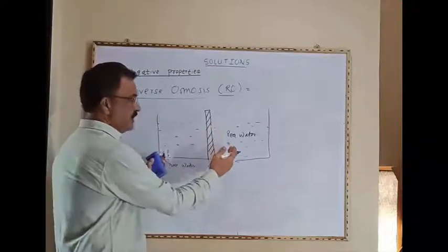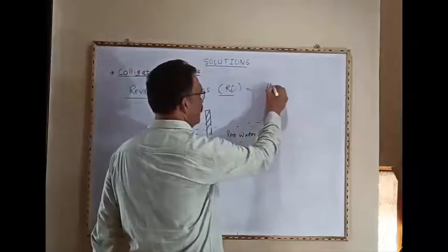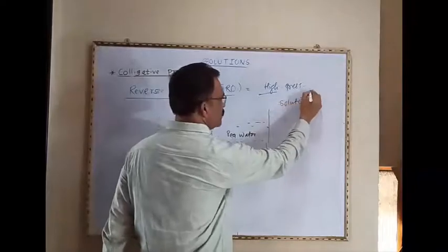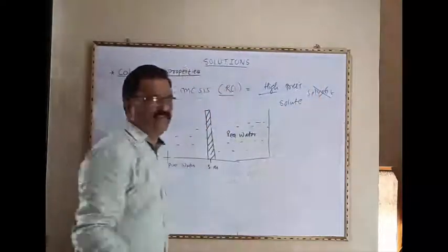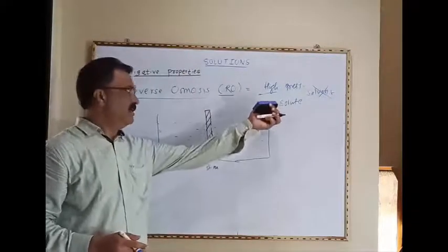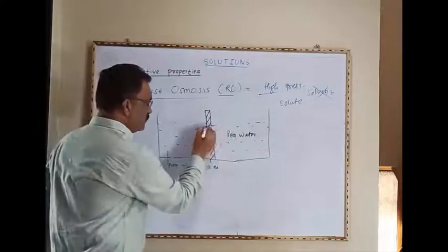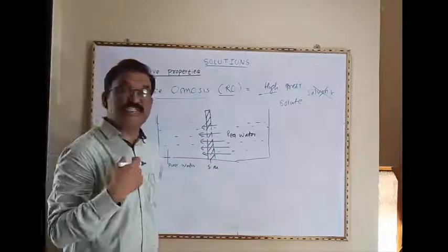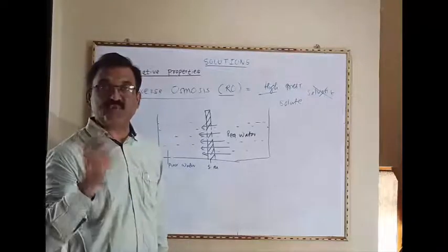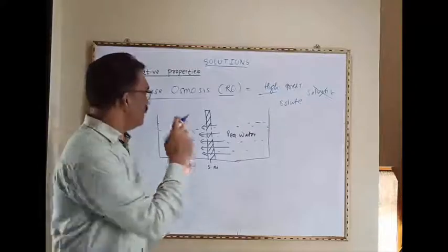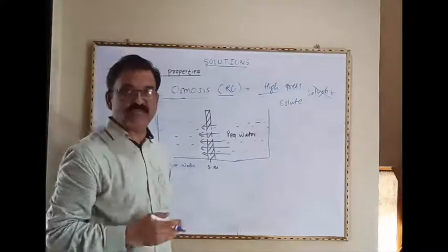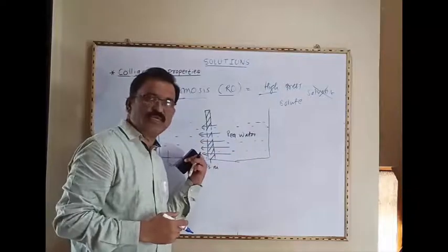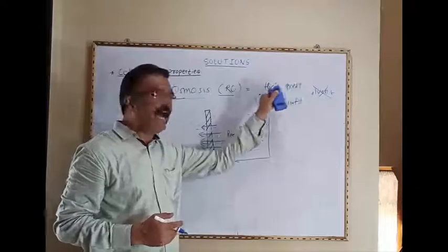But at higher pressure, this process takes place in reverse manner. At very high pressure, there is flow of solute molecules instead of solvent. A pure solvent passes through this semi-permeable membrane — this is called reverse osmosis. Reverse osmosis is nothing but the process in which solute molecules pass into pure solvent through a semi-permeable membrane at high pressure.